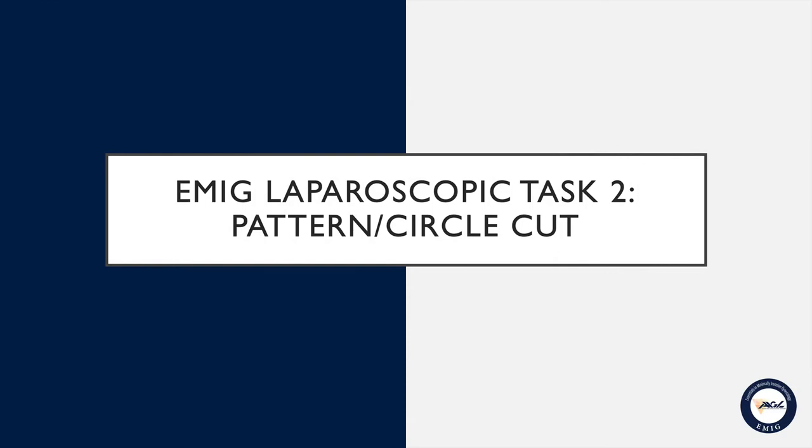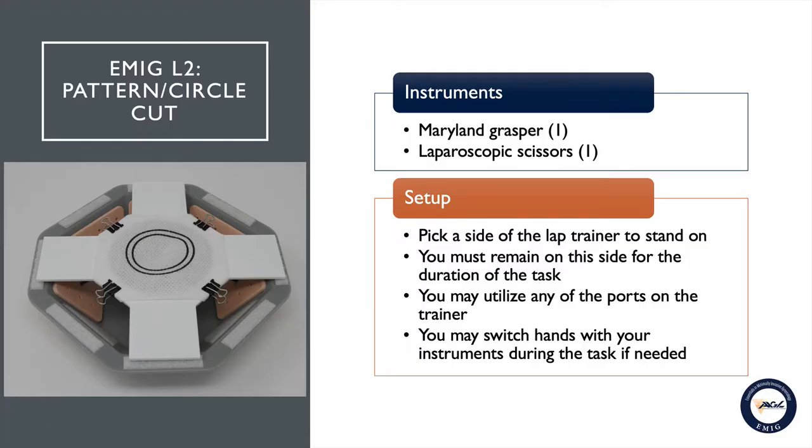EMIG task number two, pattern or circle cut. You will be provided with a Maryland grasper and one laparoscopic scissor to perform this task. You must pick a side of the lap trainer to stand on.